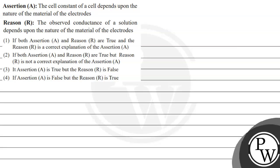Hello, let's read this question. Assertion A: The cell constant of a cell depends upon the nature of the material of the electrodes. Reason R: The observed conductance of a solution depends upon the nature of the material of the electrodes. Following options are given to us.